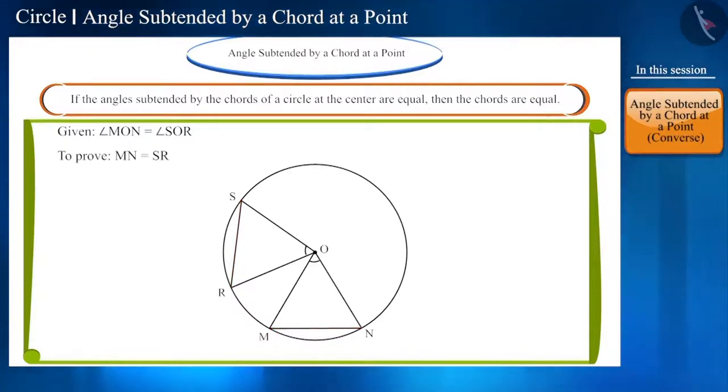Yes, if we prove these two triangles to be congruent, then both these sides will be equal. Because the corresponding parts of congruent triangles are equal, their corresponding sides will also be equal. Why don't you pause the video and try to prove it?